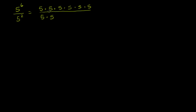We know how to simplify a fraction or a rational expression like this. We can divide the numerator and the denominator by one 5, and those cancel out. Then we do it by another 5, and those cancel out too. What are we going to be left with? 5 times 5 times 5 times 5 over 1 — or you could say this is just 5 to the fourth power.